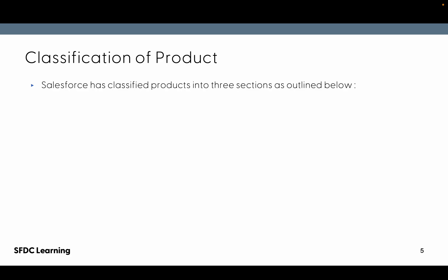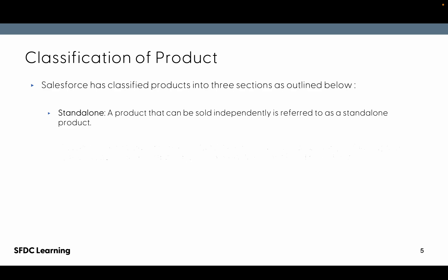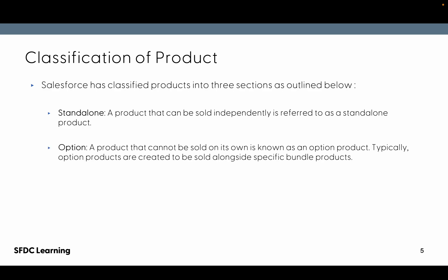Salesforce has classified products into three sections. The first is standalone — a product that can be sold independently. The second is option — this is similar to standalone but with certain properties set. An option product is one that cannot be sold on its own; it is typically created to be sold alongside a specific bundle product only.